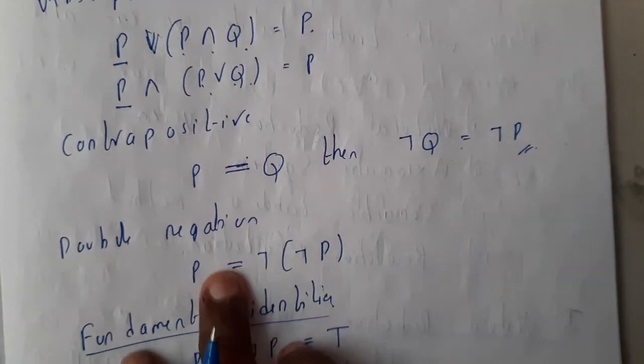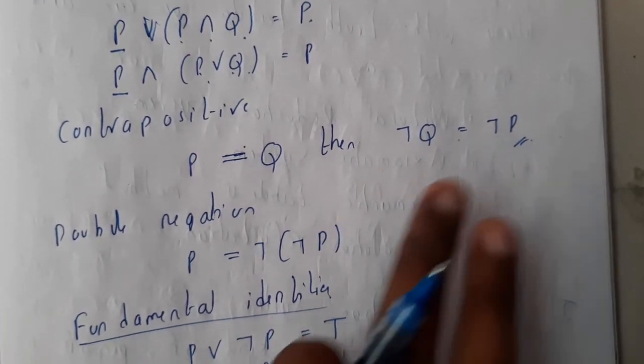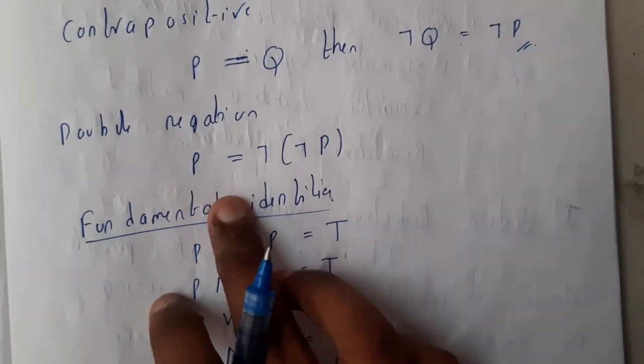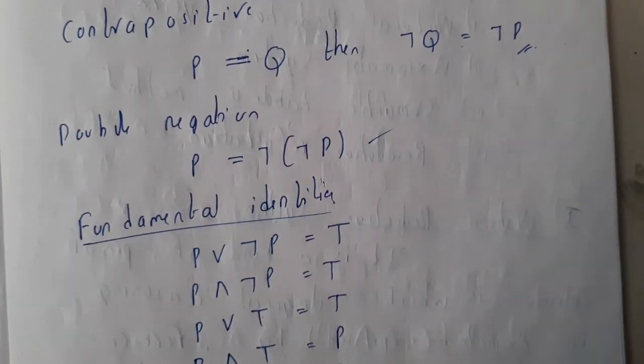Contrapositive: contrapositive is nothing but if P equals Q, then negation of Q is equal to negation of P. After that we are having double negation. Double negation is negation of negation of P is nothing but P.